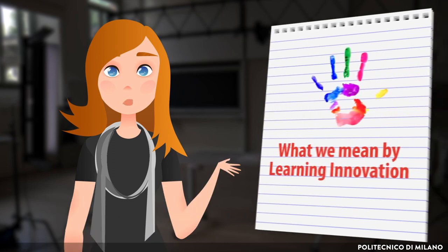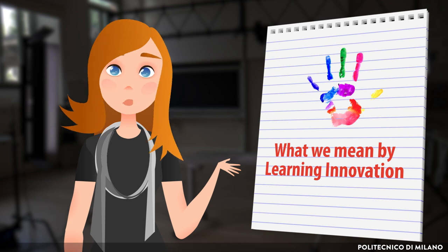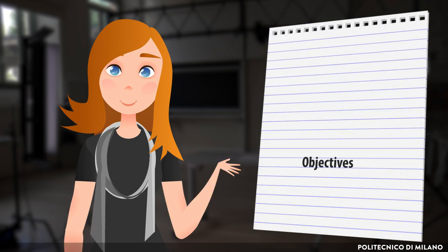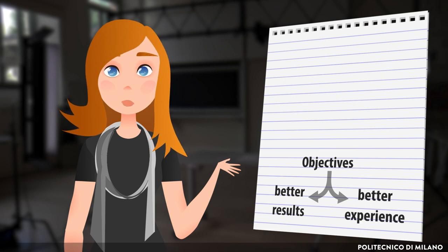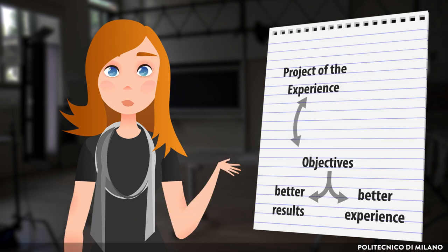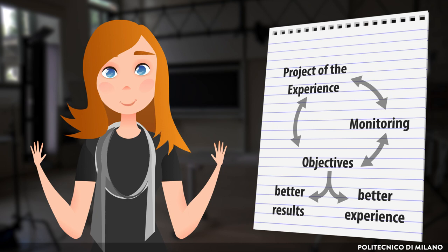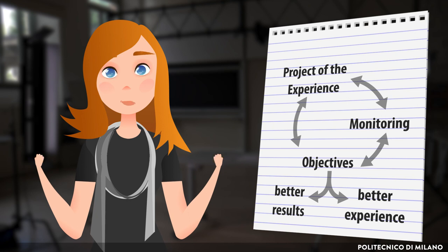So, to sum up, we can say that what has been set up to now has served to start building the setting where we are going to operate in this MOOC. When we talk about learning innovation, we are talking about a process that starts from the definition of goals — either improving and expanding the intended learning outcomes or improving the teaching experience for students and teachers. These goals must lead to a designing phase that must constantly be monitored to verify if the objectives are achieved and to obtain feedback to adjust the design process.